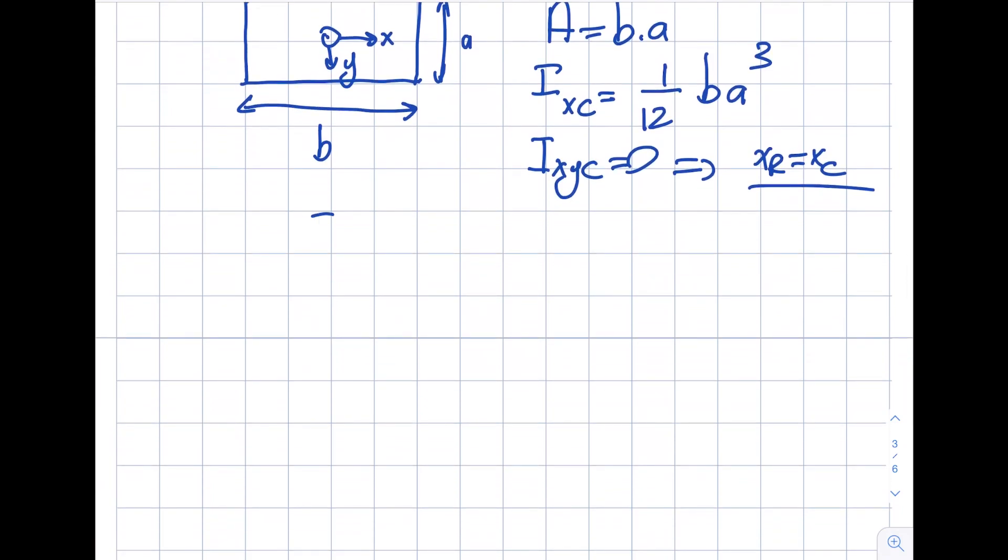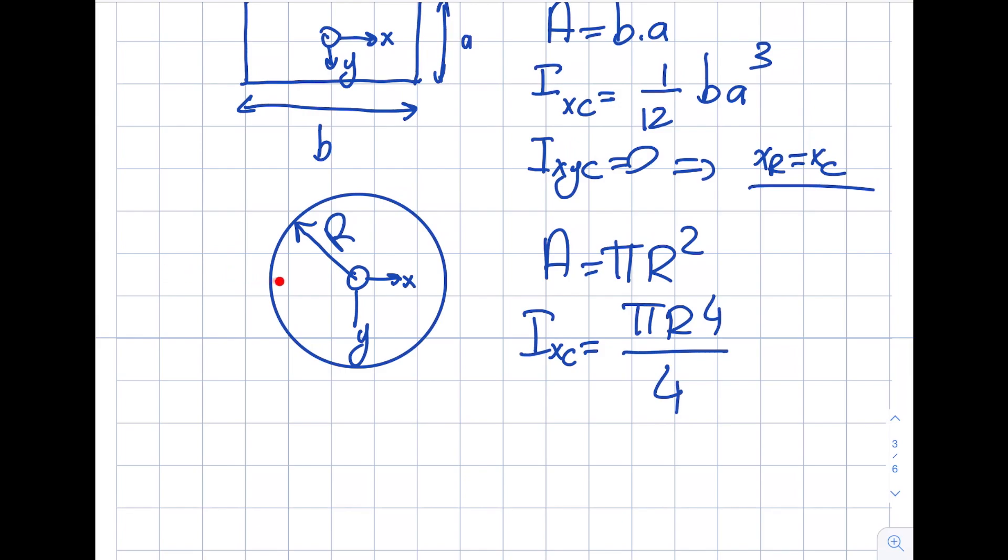The second common shape you will imagine is the circle. This is the X, this is the Y, and radius, you can imagine, will be the radius. Area will be pi R squared. IXC will be equal to pi R to the fourth divided by four. I'm sure you're familiar with this as well. Let's take a look: is this symmetric up and down, bottom half and top half? Yep. My IXYC will be zero, so XR will be the centroid of the circle, which is right at this point.